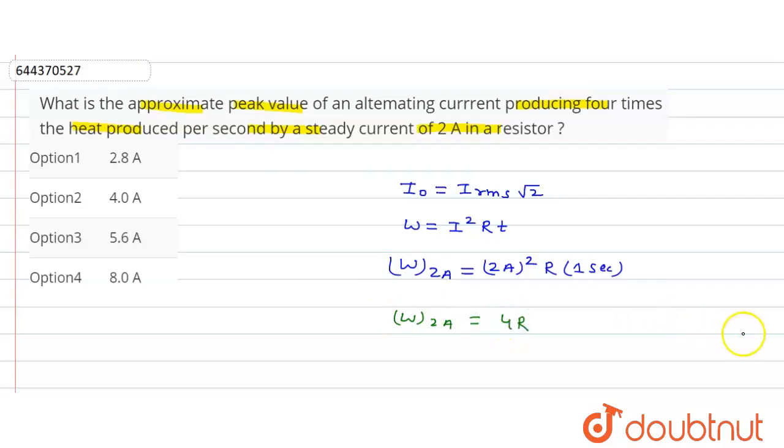Now since the alternating current produces four times the heat produced by the steady current, the heat produced by the alternating current...